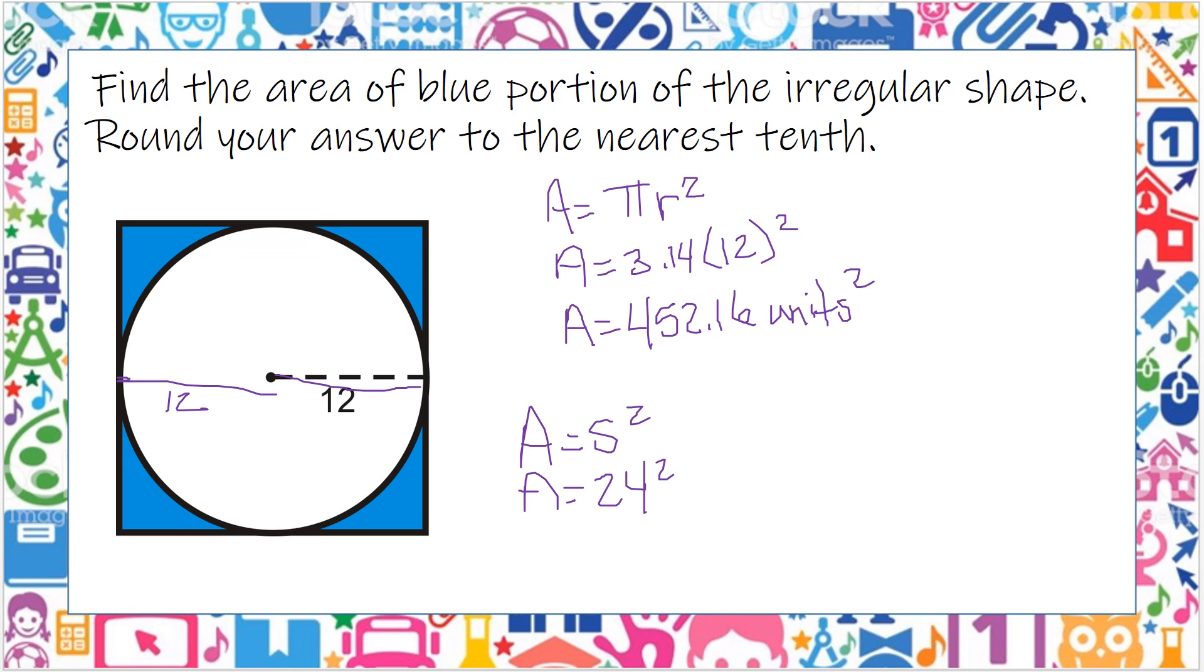So 12 plus 12 is 24, so this is 24 squared. 24 squared, if I add 24 times 24, I get 576. And then I'm going to subtract these two to find the blue, 576 minus 452, and it says to the nearest tenth, so I'm going to do 0.2.